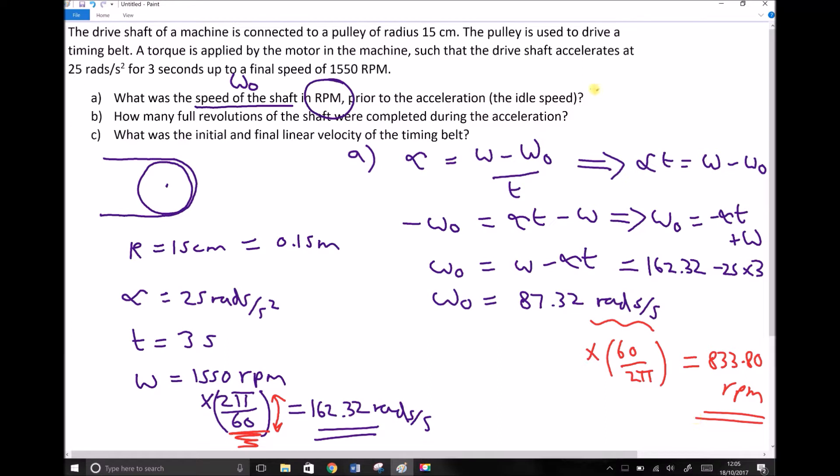So we've found what part a is asking us for, the initial velocity of the shaft, prior to the acceleration. So essentially what we're saying is that the shaft is accelerated from 833.8 rpm up to 1550 rpm in three seconds at a rate of 25 rads per second squared.